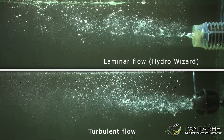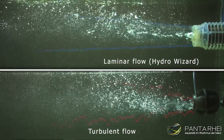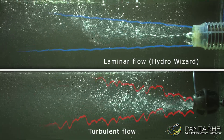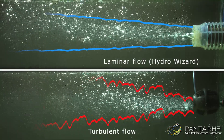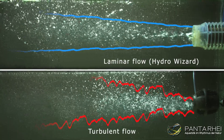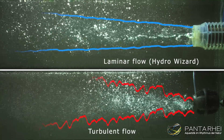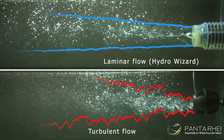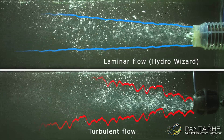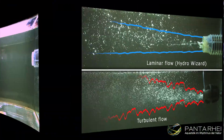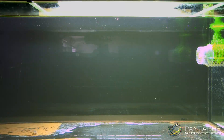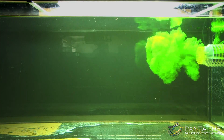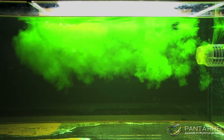To show this more clearly, we have placed a HydroWizard in direct comparison to a conventional pump. The air bubbles show the effect of the HydroWizard and the advantage of laminar flow. To observe the actual current, we will use dye in the water, as it is easier to see on camera.